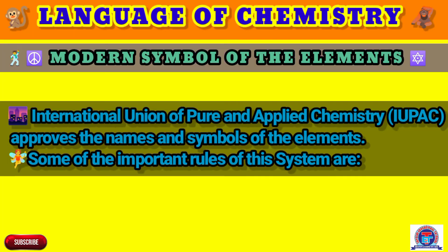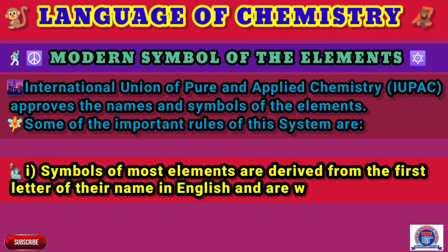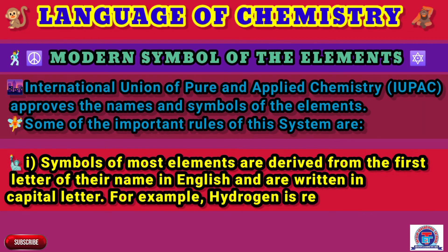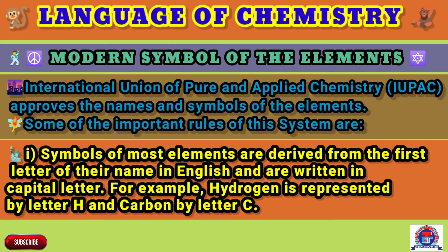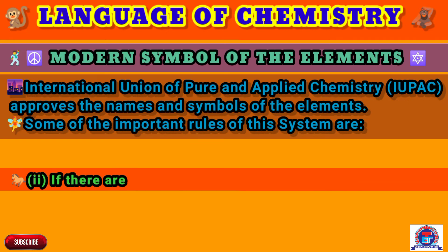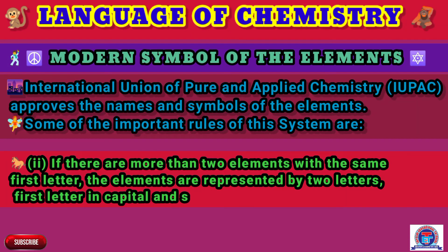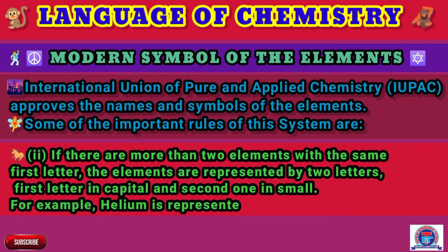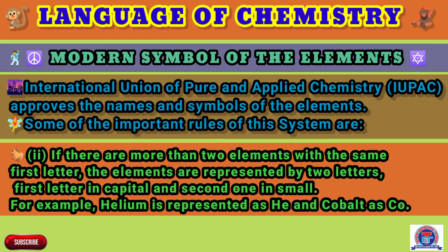Some of the important rules of this system are: Rule 1 — symbols of most elements are derived from the first letter of their name in English and are written in capital letters. For example, hydrogen is represented by H and carbon by C. Rule 2 — if there are more than two elements with the same first letter, the elements are represented by two letters: the first letter in capital and the second one in small. For example, helium is represented as He and cobalt as Co.